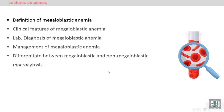We will continue anemia by discussing megaloblastic anemia — how to diagnose it clinically and appropriately, and how to manage it. At the end of this lecture, we will differentiate between megaloblastic macrocytosis and non-megaloblastic macrocytosis. There are two types of macrocytosis: megaloblastic and non-megaloblastic.